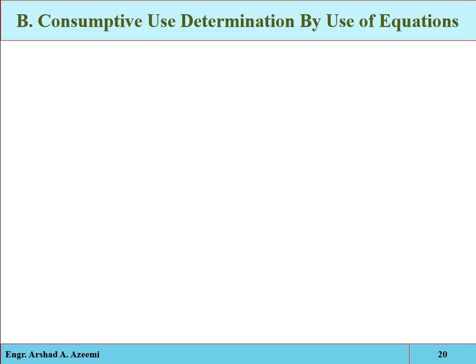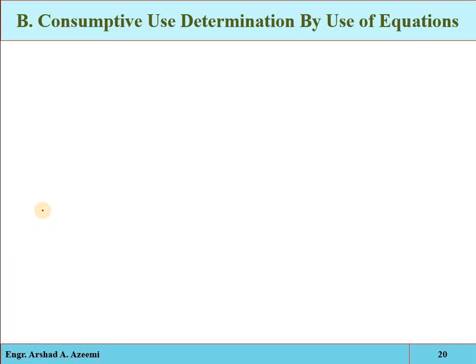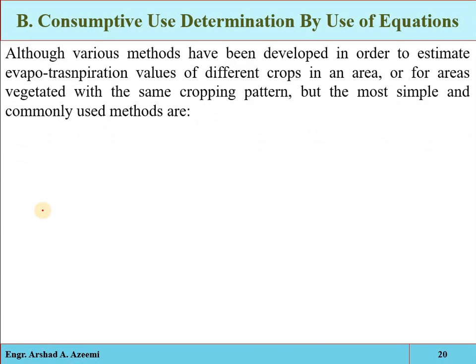In continuation of the first part of this lecture, we will discuss some indirect methods for the determination of consumptive use or evapotranspiration. In the first part we discussed the direct methods — the experimental methods — which were the tank and lysimeter method, field experimental plots, soil moisture studies, and the inflow-outflow studies for large areas. Now we will discuss the indirect methods, or empirical methods, derived by different researchers based on experiments.